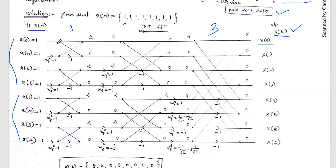Similarly for the second butterfly: 1 plus 1 equals 2, and 1 minus 1 equals 0. For the third and fourth butterflies the inputs are the same, so we get the same results: 2, 0, 2, 0. So the first stage outputs are 2, 0, 2, 0, 2, 0, 2, 0.